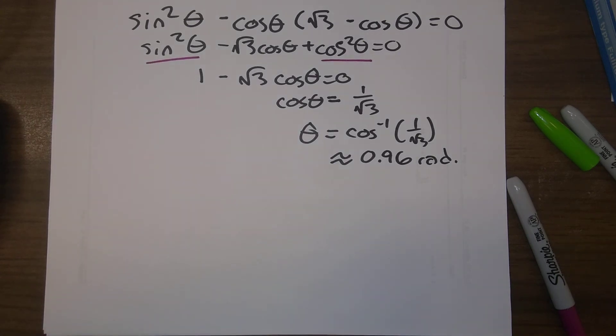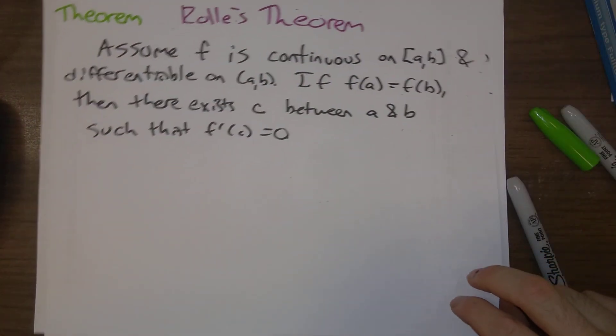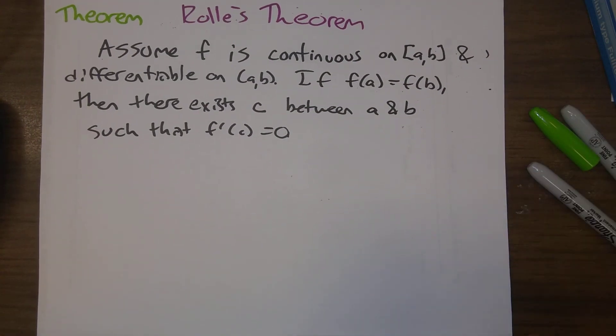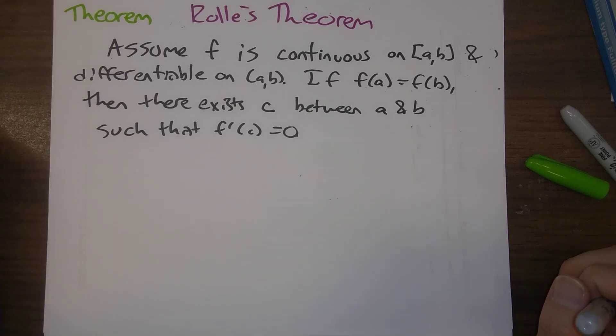One final thing to talk about has to do with Rolle's theorem. We'll end with this. If f is continuous on a closed interval a to b and differentiable in between a and b, if f of a is equal to f of b, then there's some point c between a and b such that f prime of c is equal to zero.